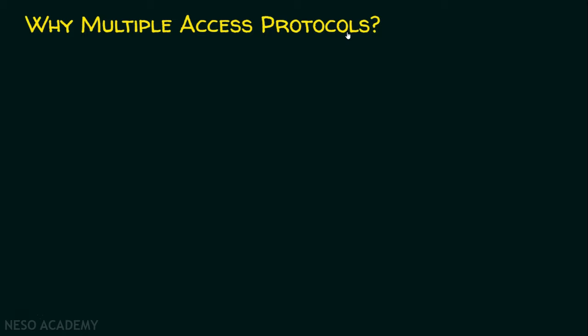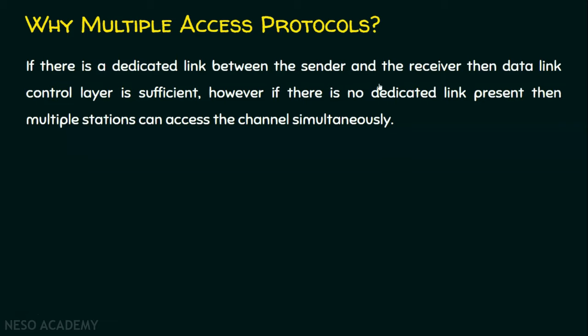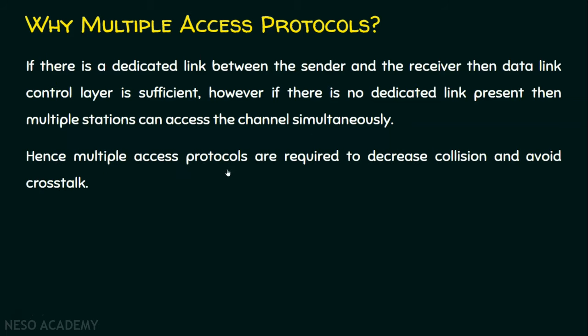Let's see in detail why we need multiple access protocols. If there is a dedicated link between the sender and the receiver, the data link control layer is sufficient, since the channel is exclusively between them. However, if there is no dedicated link, multiple stations can access the channel simultaneously, leading to a serious problem called collision. Multiple access protocols are required to decrease collision and avoid cross-talk. Collision means if two or more stations send data at the same time without checking whether the channel is busy or idle, the data will collide and become unusable.